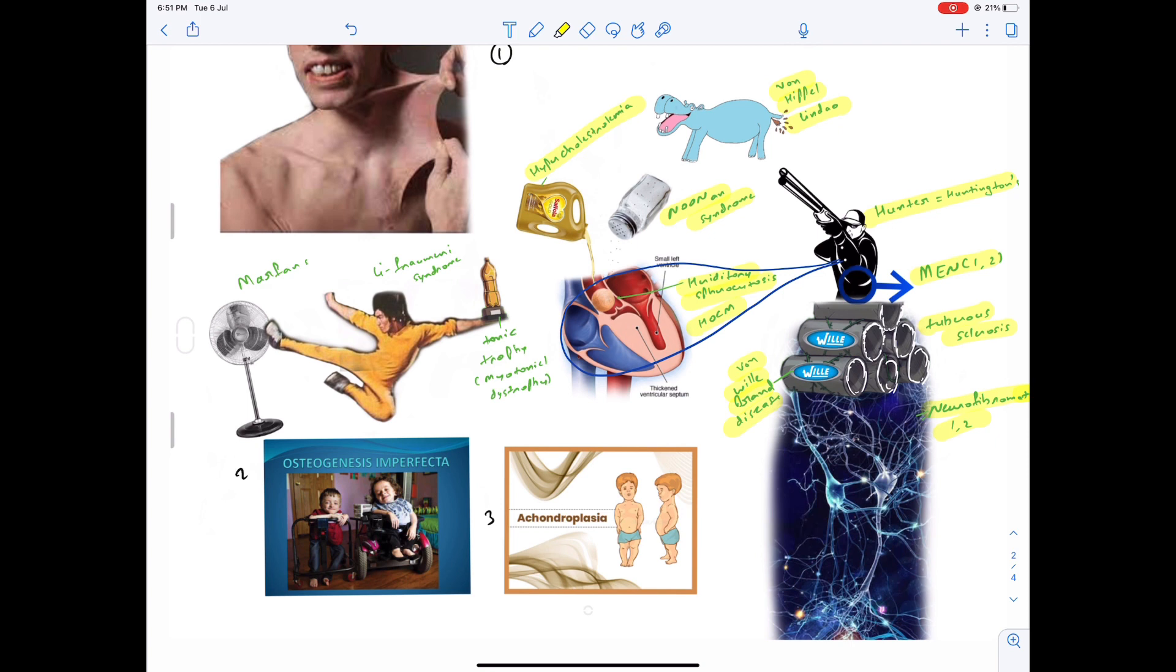There is also a short story on the left side where Bruce Lee is saving his tonic trophy from a fan. So the tonic trophy indicates myotonic dystrophy, and the 'Lee' from Bruce Lee indicates Li-Fraumeni syndrome. Marfan's indicates that Bruce Lee 'marra hai' fan—so Marfan's.